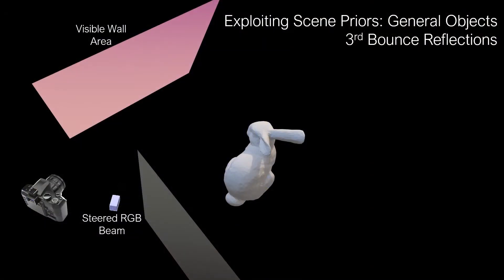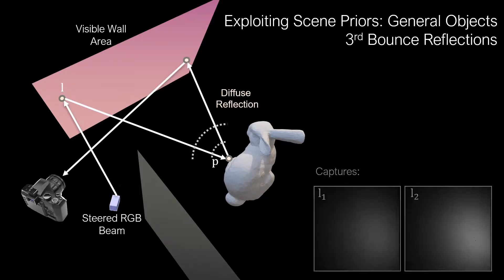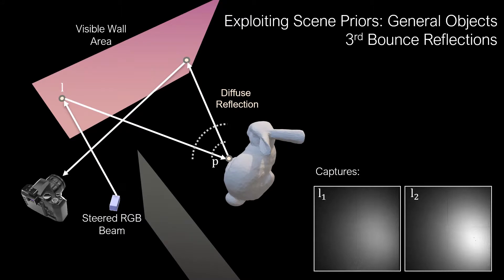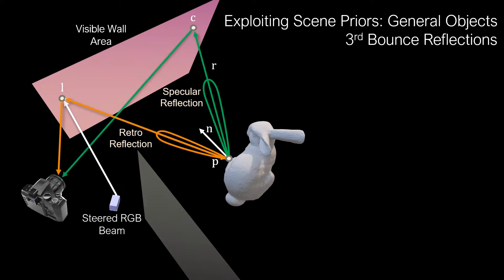Let us consider a generic object. We illuminate the wall at L. Some light scatters and reaches the object at a point P, where it diffusely scatters if the object is diffuse, resulting in low-frequency blobs shown here on the right. But the reflectance of the object may also contain a retroreflective part, sending light back to the point L, and a specular part with a specular lobe around the mirror direction R.